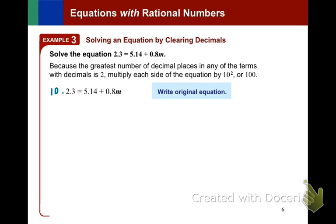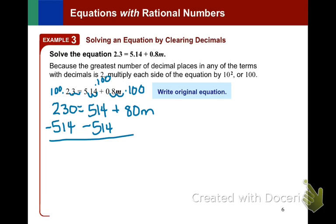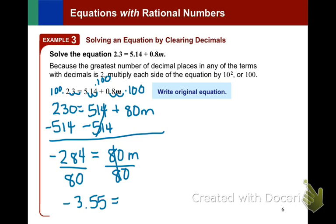So every term gets multiplied by 100. Now remember, multiplying by 100 is simply moving the decimal two places to the right. And notice how that will make this 514 to clear that. So then we can subtract 514 from both sides and divide by 80 on both sides. And you'll get a decimal answer, but you didn't have to work with the decimals along the way.